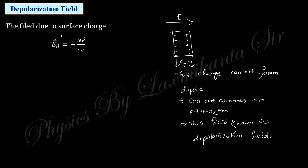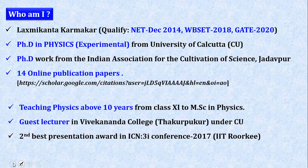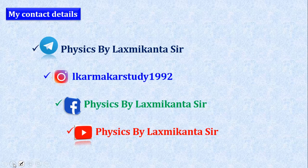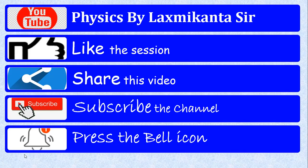The depolarization field comes into the expression: E_d equals minus N times P-vector, where N is the depolarization factor. I think these concepts are now clear, and in the next class we will discuss the upcoming part of the syllabus. This is all from me — you can connect with me through my Telegram channel and YouTube channel for more videos on mathematics and physics.